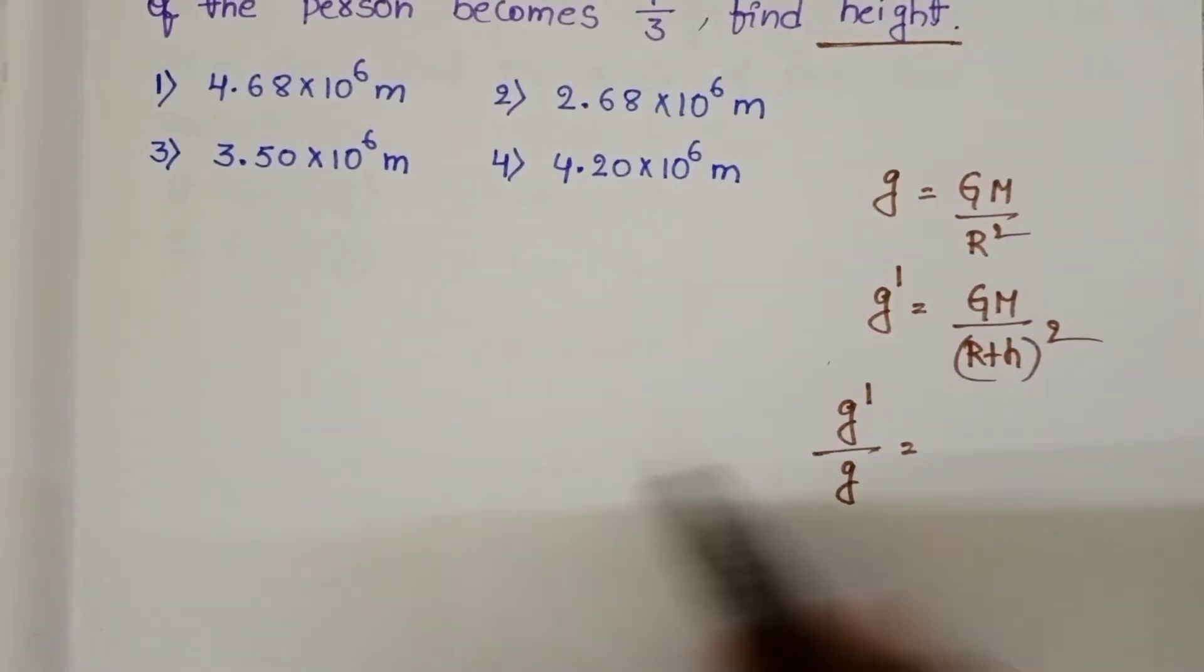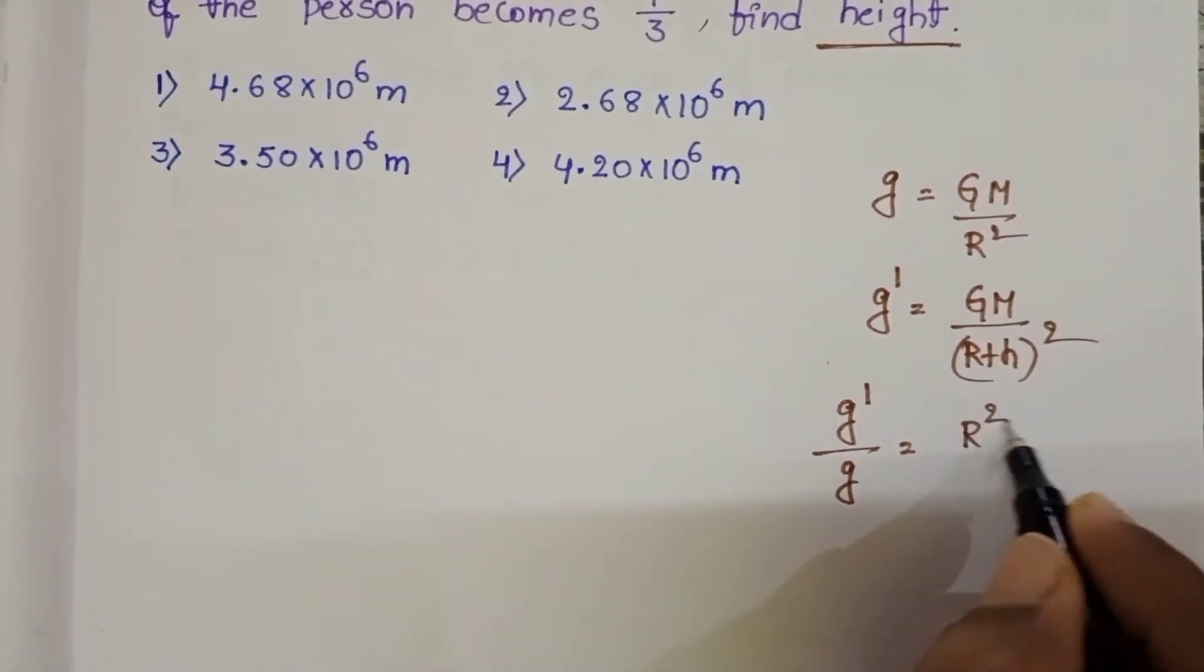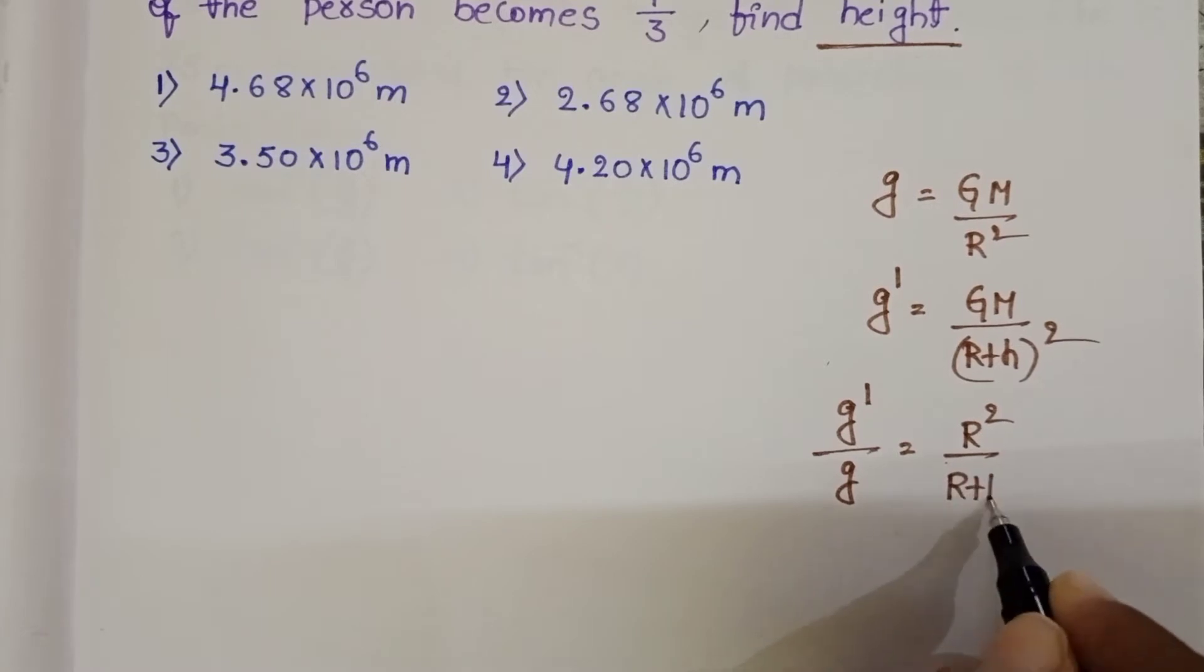So GM gets cancelled, then r square by (r plus h) whole square.